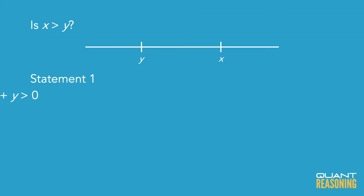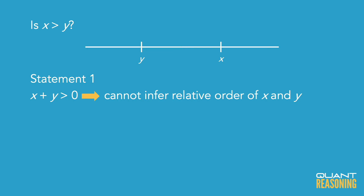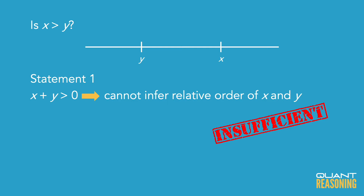Statement one is not sufficient on its own because it just tells us that their sum is positive, but it doesn't give us any indication of the relative order of x and y. We could subtract y from both sides of the inequality and say that x is to the right of negative y, but we wanted to know which side of y x is on, not which side of negative y. So statement one is not sufficient on its own, and we can eliminate answer choices A and D. We're down to just B, C, and E.